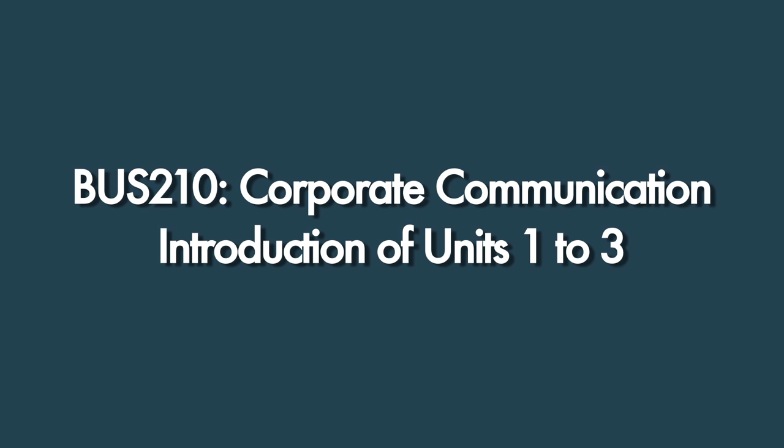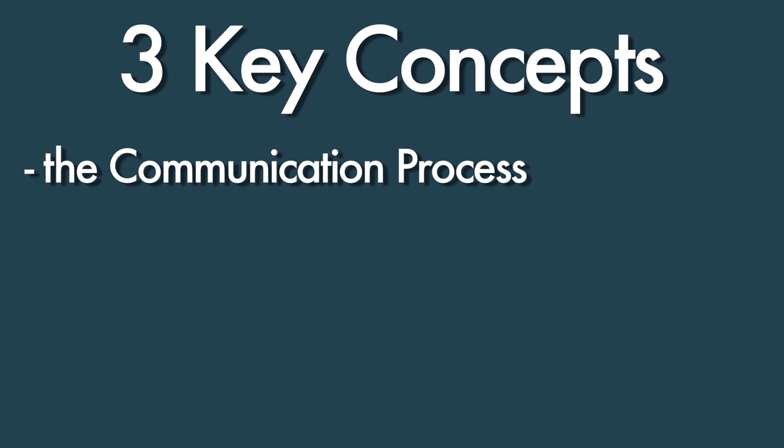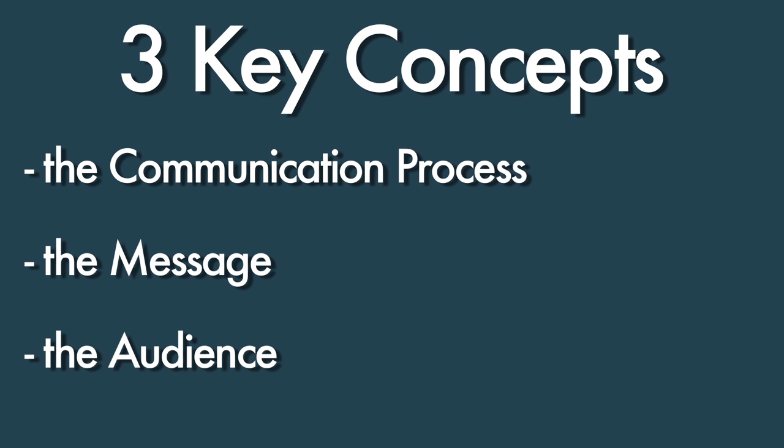Let's talk about the first three units of this course and how their contents and themes tie together. In unit one, you're going to learn about the communication process and how your traits and the traits of your audience can influence that process. It's important while going through this course to consider three main concepts: the communication process, the message that represents the communication, and the audience that you are targeting by your communication.